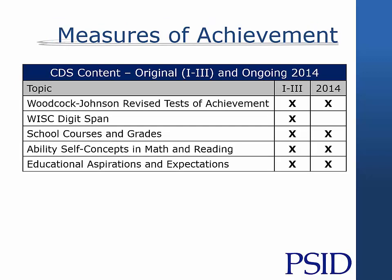Several age-specific measures of achievement are captured in the CDS. The Woodcock-Johnson revised letter-word vocabulary and applied problems for those aged 3 to 17, as well as passage comprehension for children aged 6 through 17 and primary caregivers. Child self-report of courses and grades, and parent and child reports of educational aspirations and expectations are also collected.